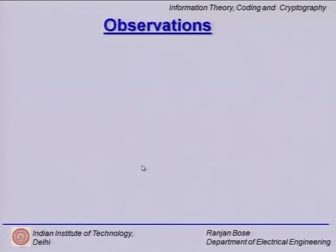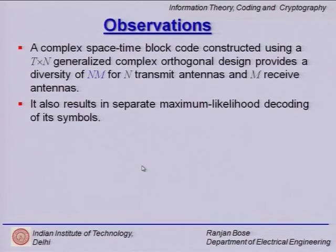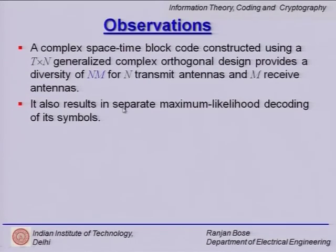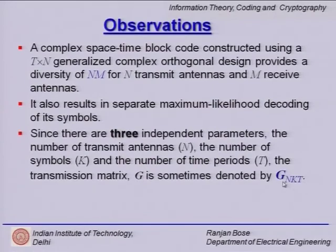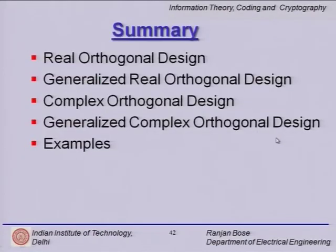At time period t=1 through T, transmit the t-th row as before, and the entry C(t,n) is transmitted from antenna element n at time period t. At the end of T time periods, effectively k symbols would have been transmitted. A complex space time block code constructed using a t×n generalized complex orthogonal design provides a diversity of n×m, where n is the number of transmit antennas and m is the number of receive antennas, and it also results in separate maximum likelihood symbol-by-symbol decoding. Note there are 3 independent parameters: n (transmit antennas), k (number of symbols), and t (time periods), so the generator matrix is sometimes denoted G_{n,k,t}.